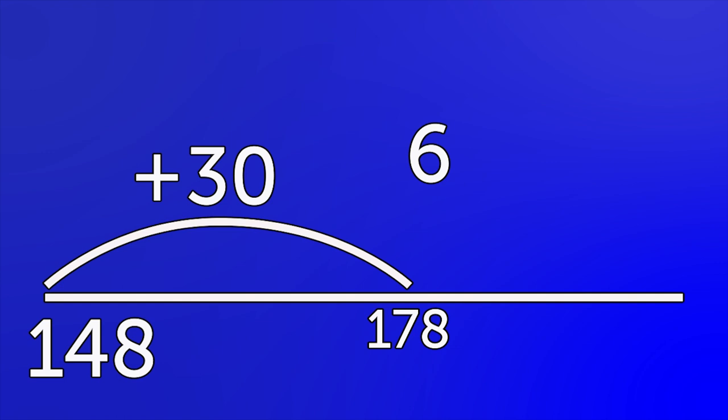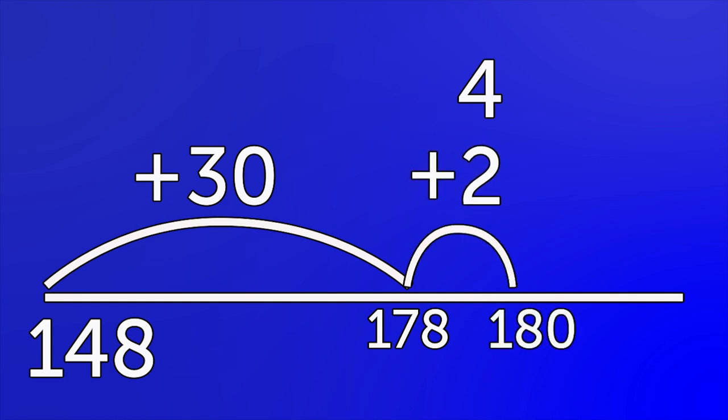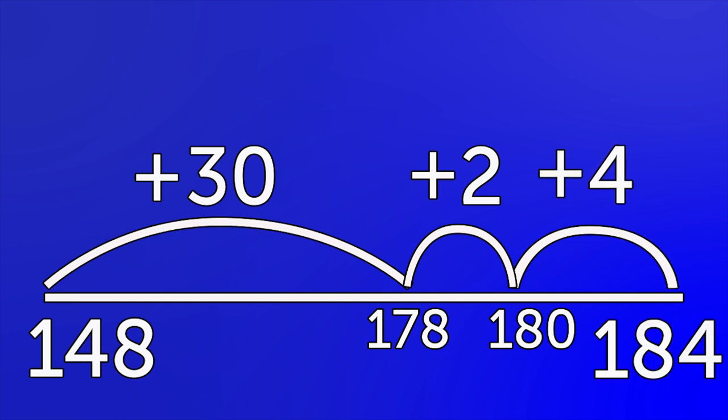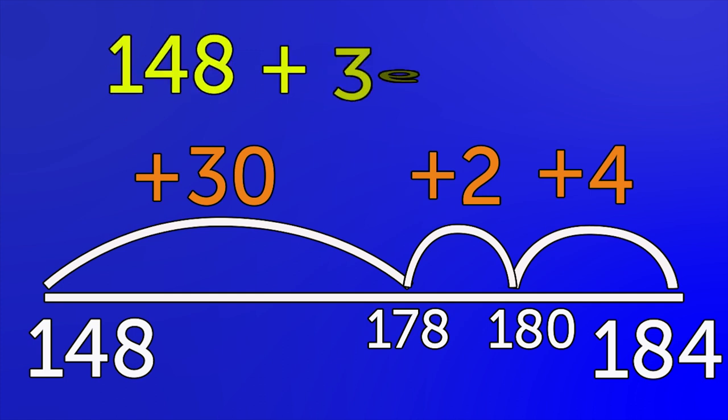One hundred and seventy-eight. Now add the ones: six. It's easier to first count on two to one hundred and eighty, and then another four — one hundred and eighty-four. Check you've added the correct amount on: thirty-six. One hundred and forty-eight plus thirty-six is one hundred and eighty-four.